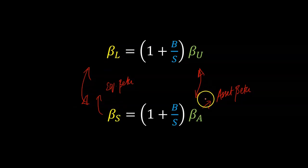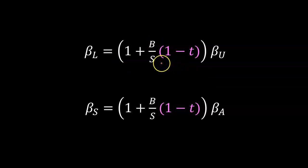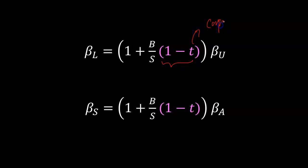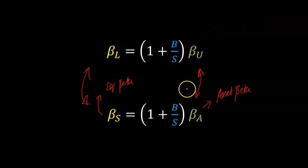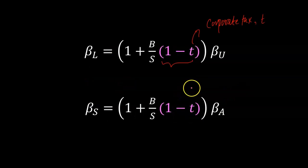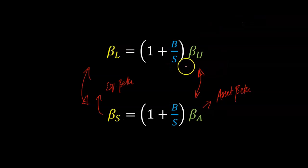Some of you may see the exact same set of equations but in a form where, against B over S, you also have the expression (1 minus T), where T stands for the corporate tax rate. You might think this formula is used when there are taxes and the other when there aren't. It turns out that even in the presence of taxes, you can use either equation.